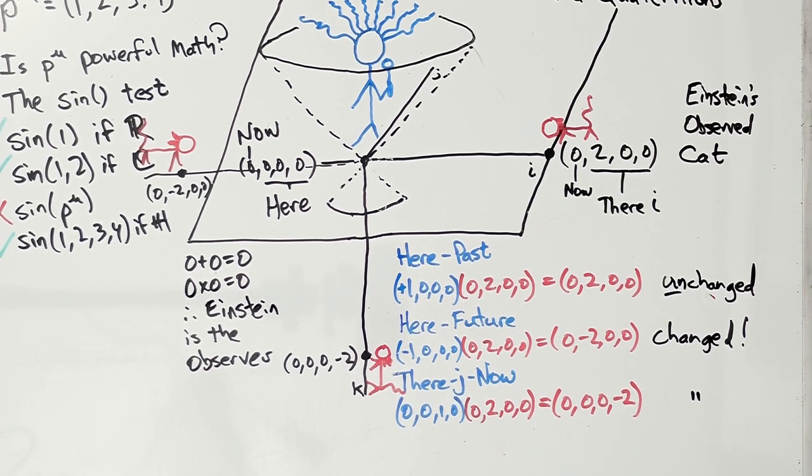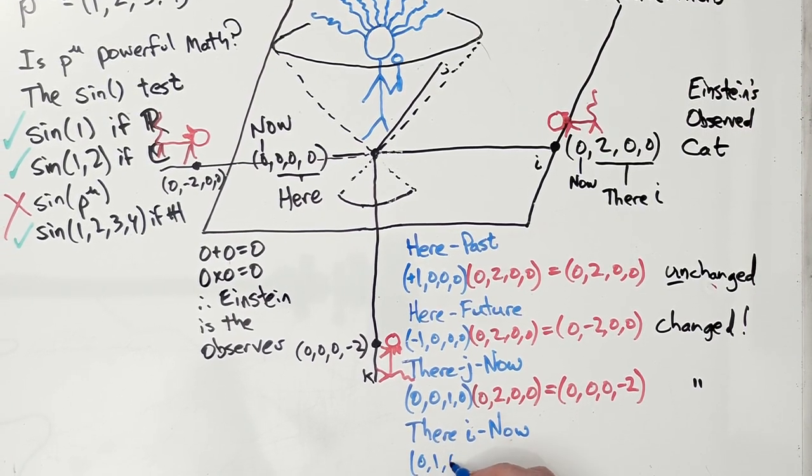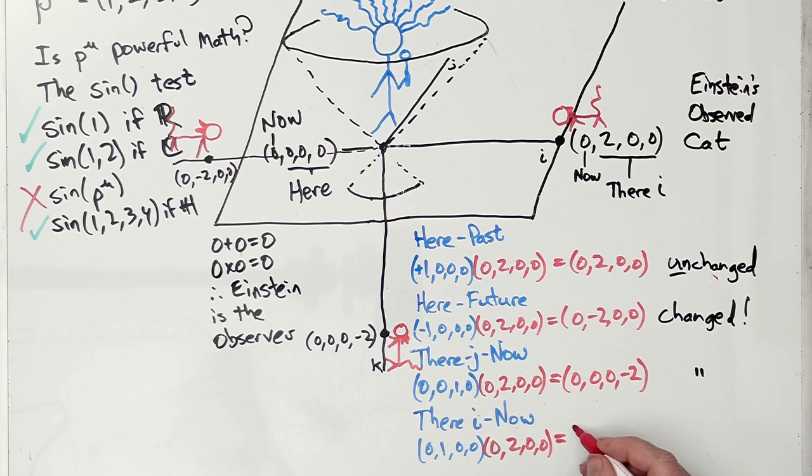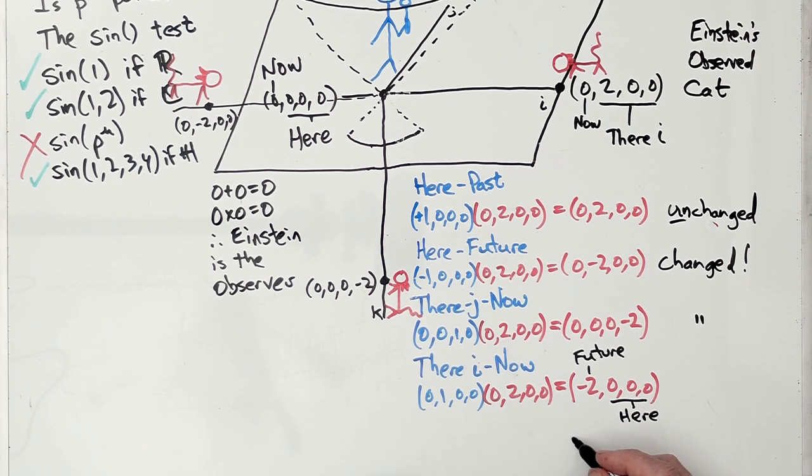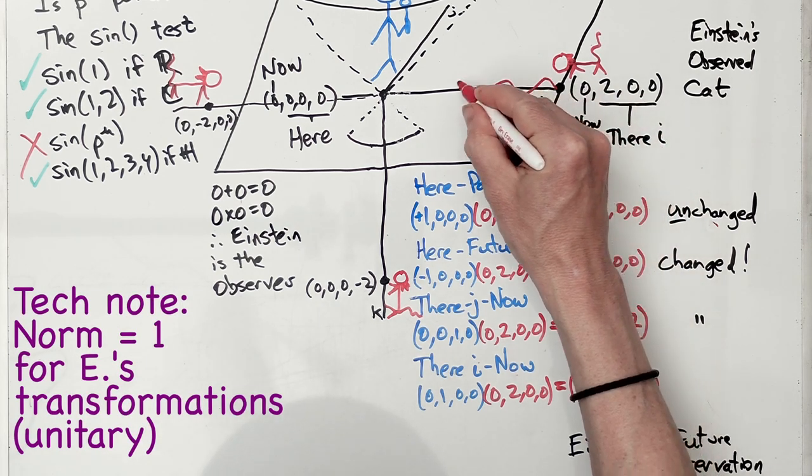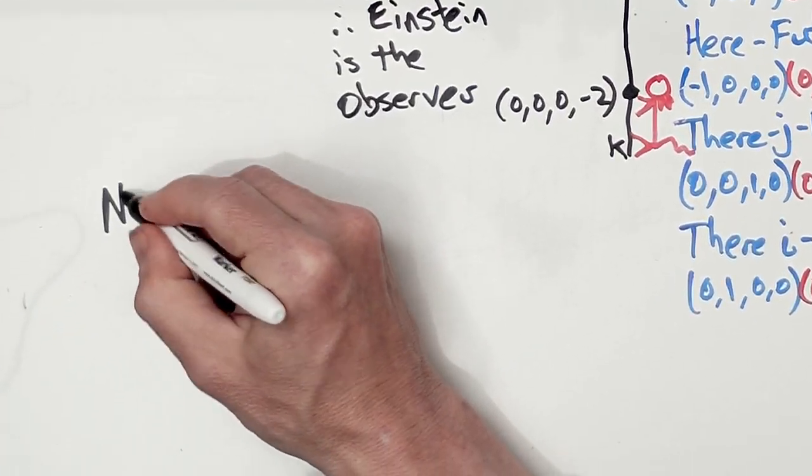All right. And let's do one more transformation. Let's go with the there I now. (0, 1, 0, 0) times the position of the cat. And we end up with (-2, 0, 0, 0). So the -2, I say, is the future, and it's here. It's where Einstein is. So I believe that can be interpreted as Einstein's future observation of his very own cat. And that happens by the cat sending photons to Einstein.